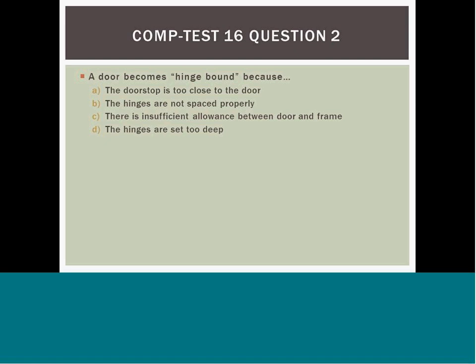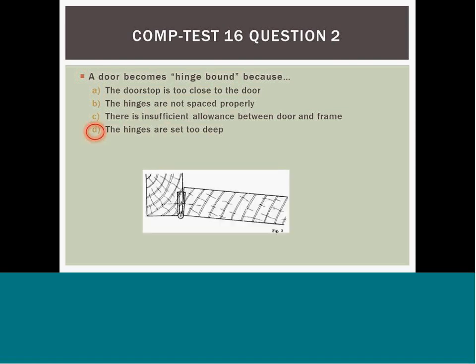Question 16: A door is hinge-bound because A) the door is too close to the door frame, B) hinges are not spaced properly, C) there is insufficient allowance between the door and the frame, or D) hinges are set too deep. Answer D is correct. The picture on the screen shows that the door hits the jamb and is hinge-bound because the hinges are set too deep.